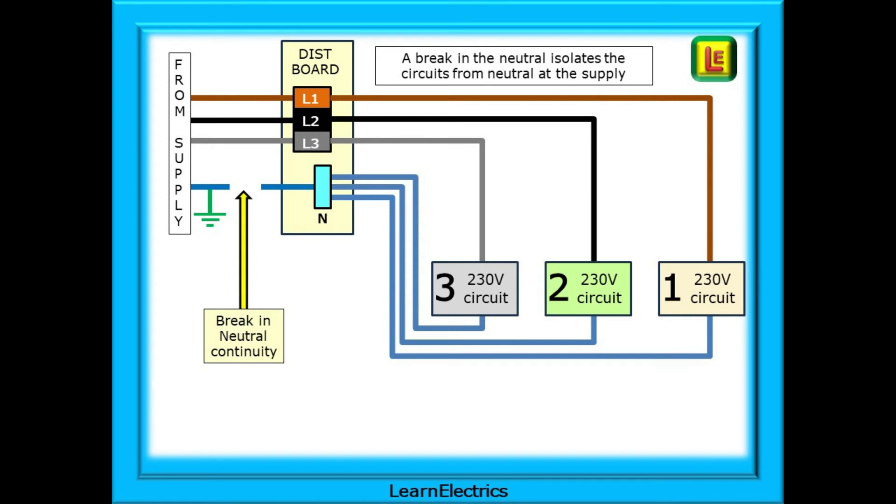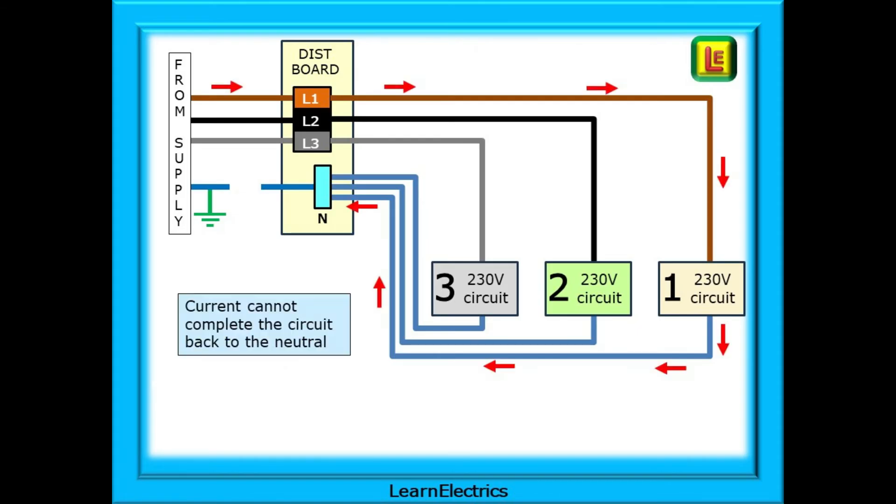On this slide, we can see that the neutral from the supply has been damaged. There is now no neutral connection at the distribution board. But the neutrals for all the single phase circuits are still intact, still in place. Each single phase circuit is still connected to the neutral bar, and each circuit is still connected to its own circuit breaker. The current flowing through L1 would like to flow through the attached number one circuits, but their exit from the installation is prevented by the broken neutral on the upstream side of the distribution board.